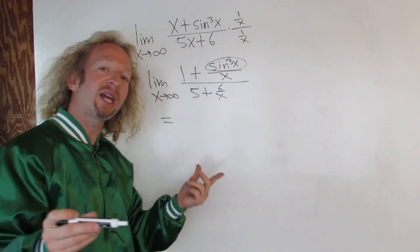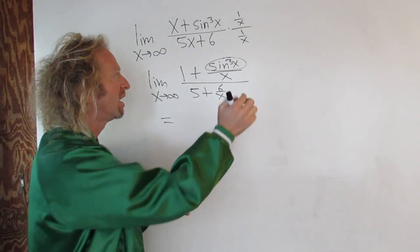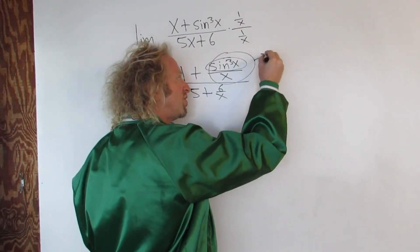It's trapped between negative 1 and 1. x is getting really, really, really big. So this fraction is going to 0.